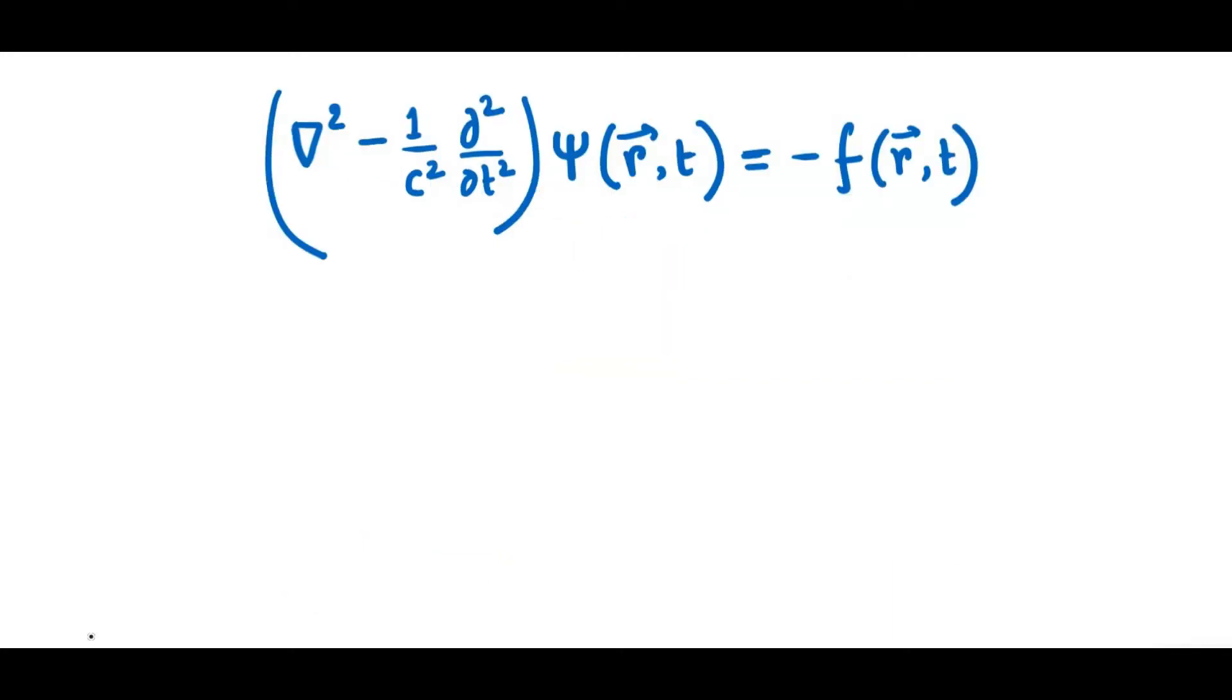So this is our inhomogeneous wave equation and we know that the corresponding equation for Green's function can be written as this differential operator right here, which we also called the d'Alembertian operator, acting on the Green's function.